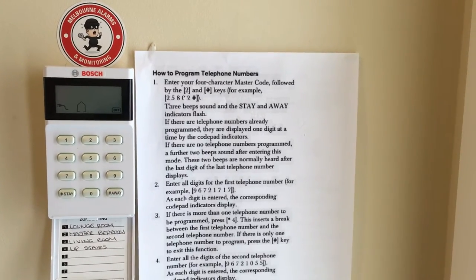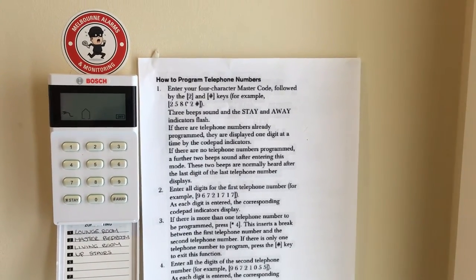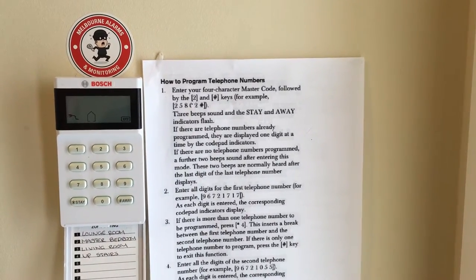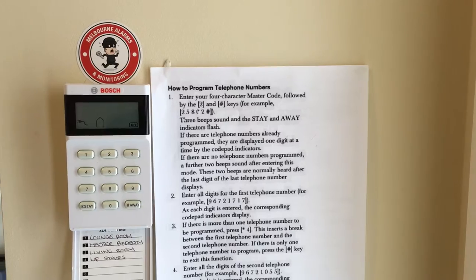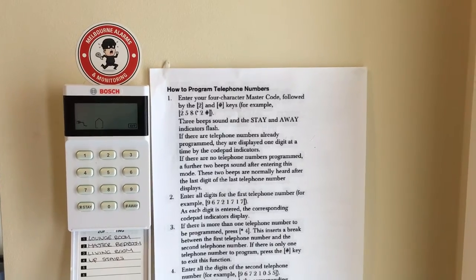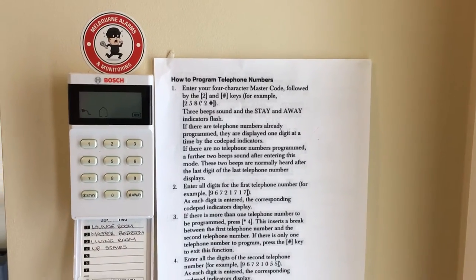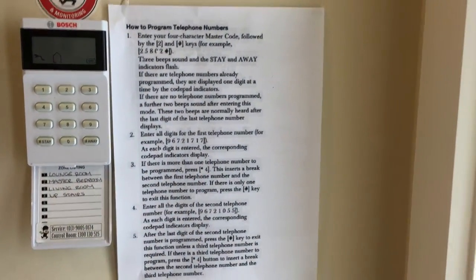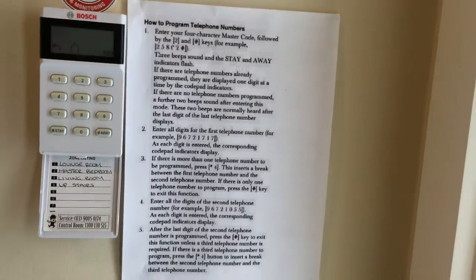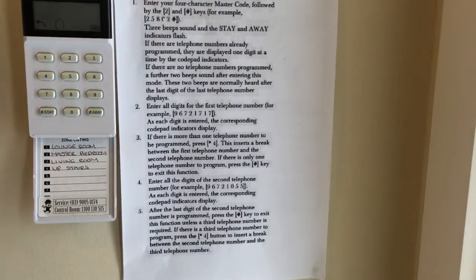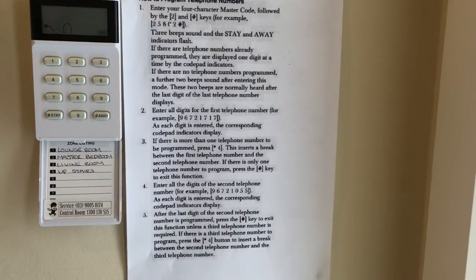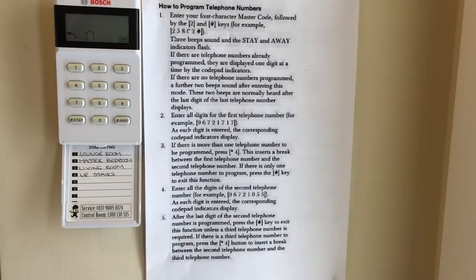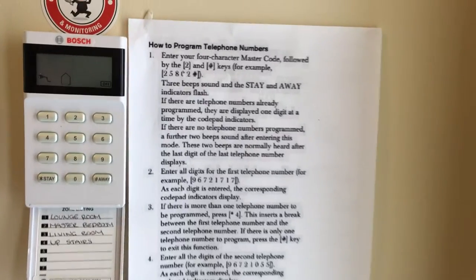Hello, this is Tara and Steve from Melbourne Alarms. In this video, we're going to show you how to change the phone numbers that are in the system for the mobile phone alert. We have this sheet here printed out, that's out of your user manual. It's quite a lot of information and hard to understand, so we're just going to make it a tiny bit easier for you.